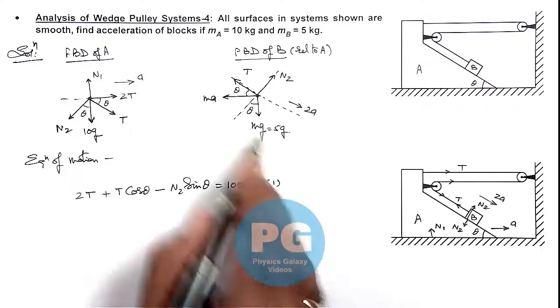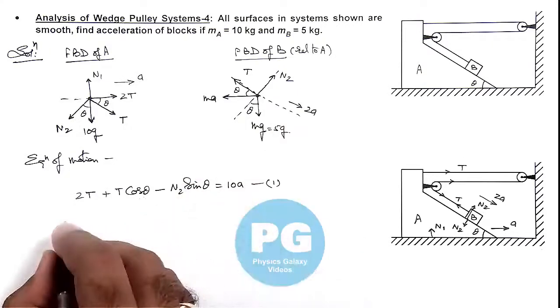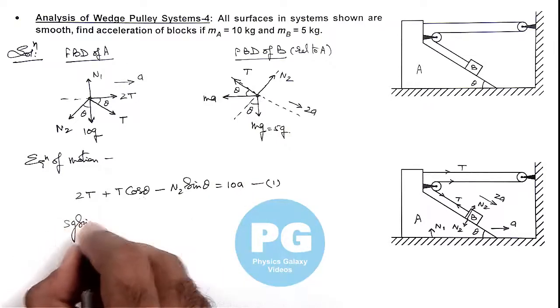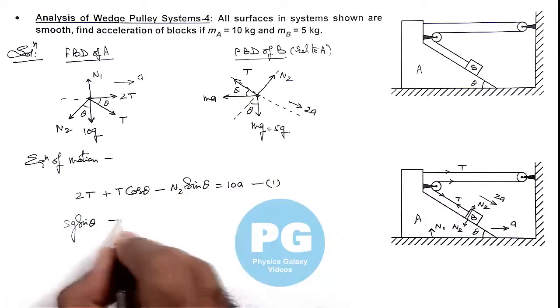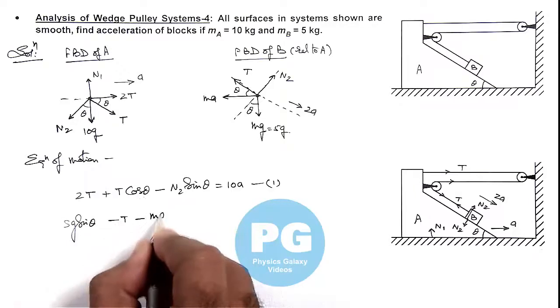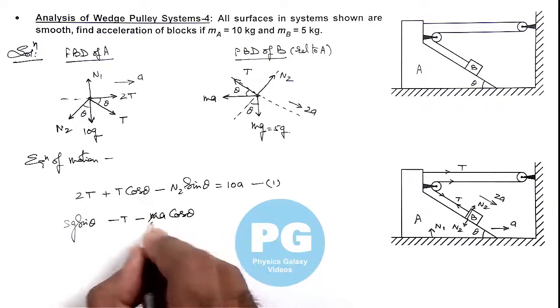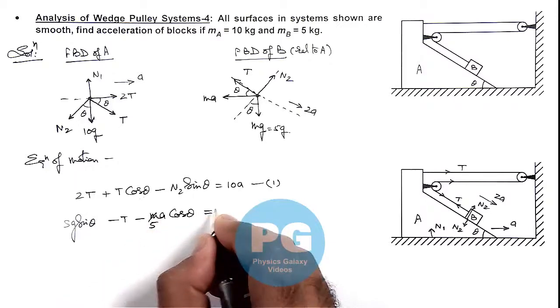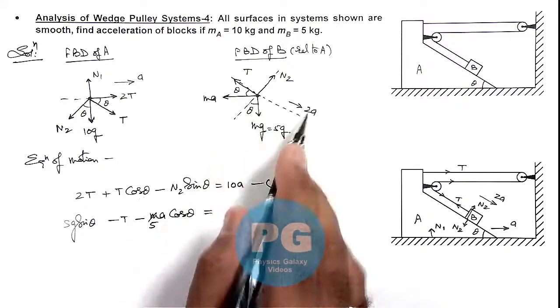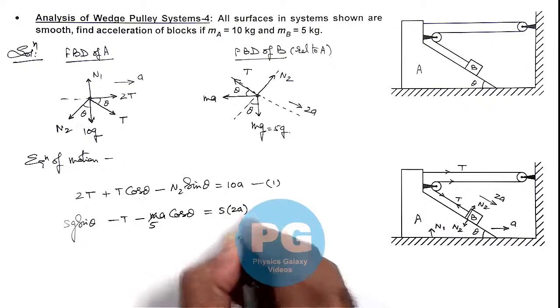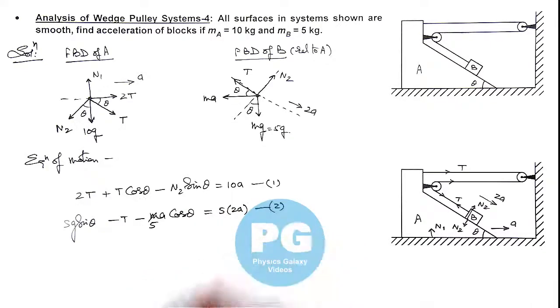And for B, here we can see as it is sliding down the incline with respect to block A at acceleration 2aA, so its equation we can write as 5g sin theta minus T minus 5aA cos theta is equal to its mass is 5 and acceleration is 2aA, we can write 5 multiplied by 2aA. That is our second equation of motion.